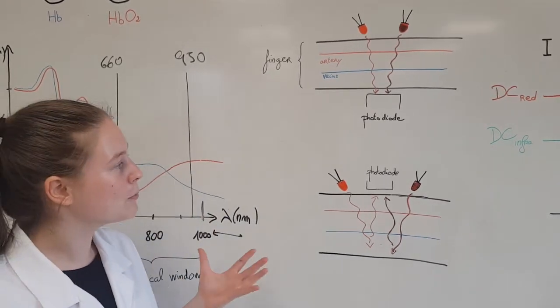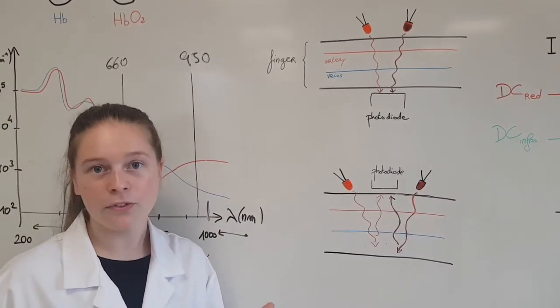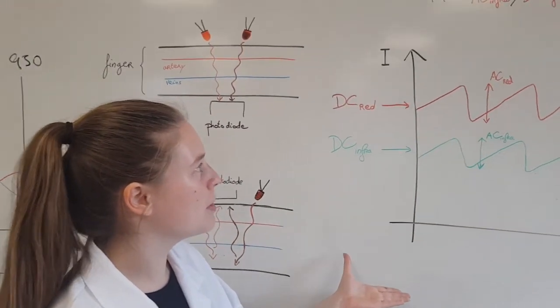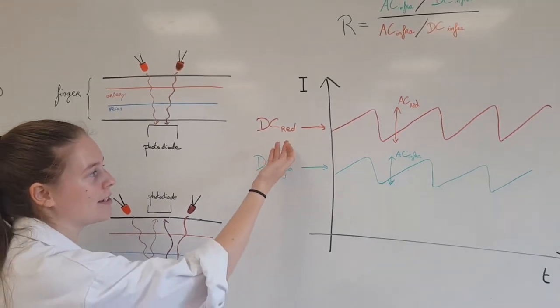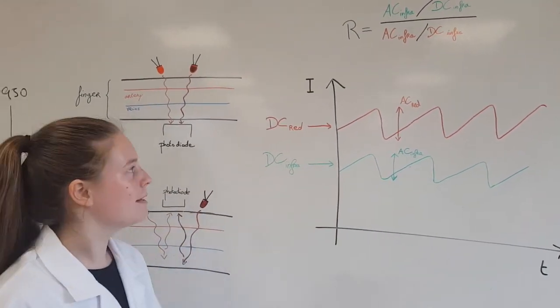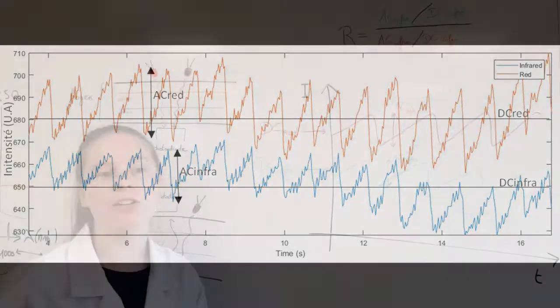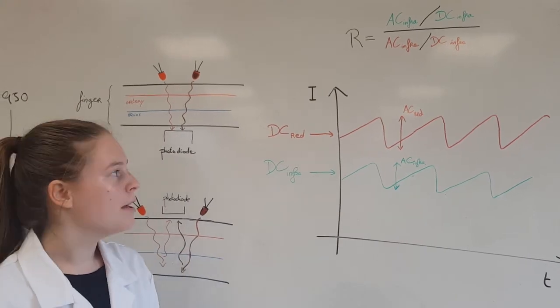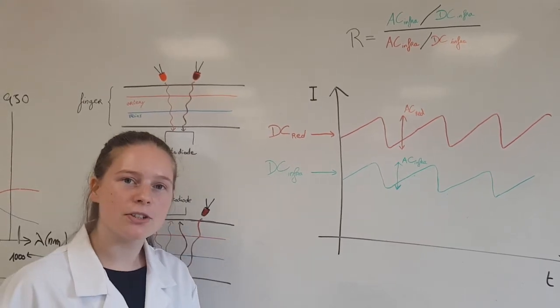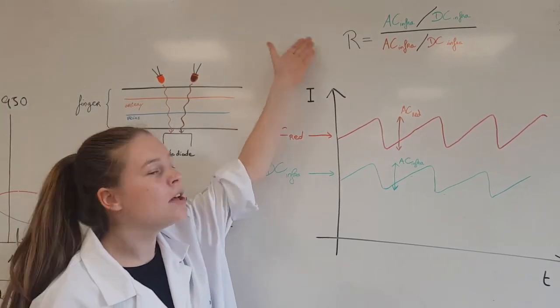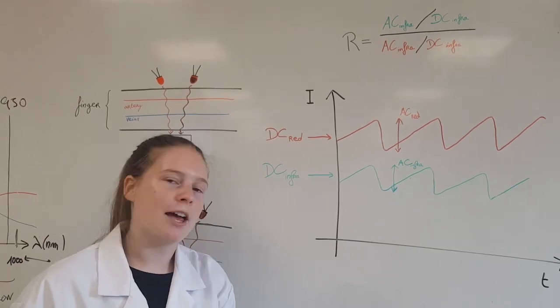The photodiode measures the light collected from each LED separately. Here is a representation of the signal we can obtain for each LED: the red light and the infrared light. DC components correspond to the average light intensity transmitted, and AC components correspond to the variation of light intensity collected during each heartbeat. Making a ratio of these measured values enables us to access the oxygen rate of the patient's blood, which should be around 98% for a healthy patient.